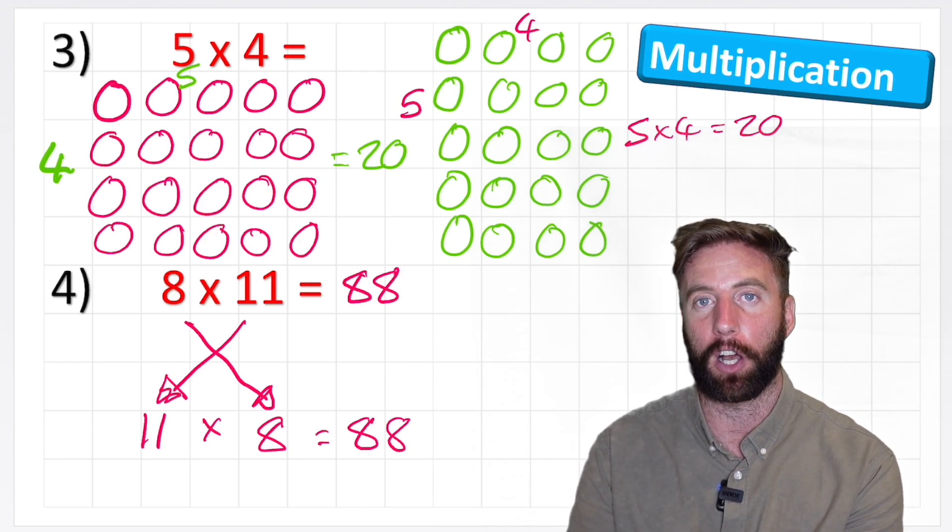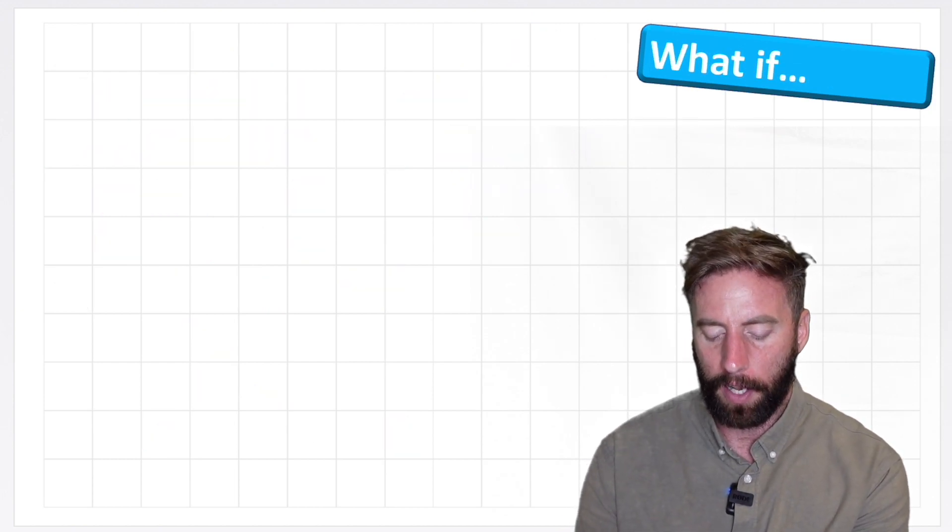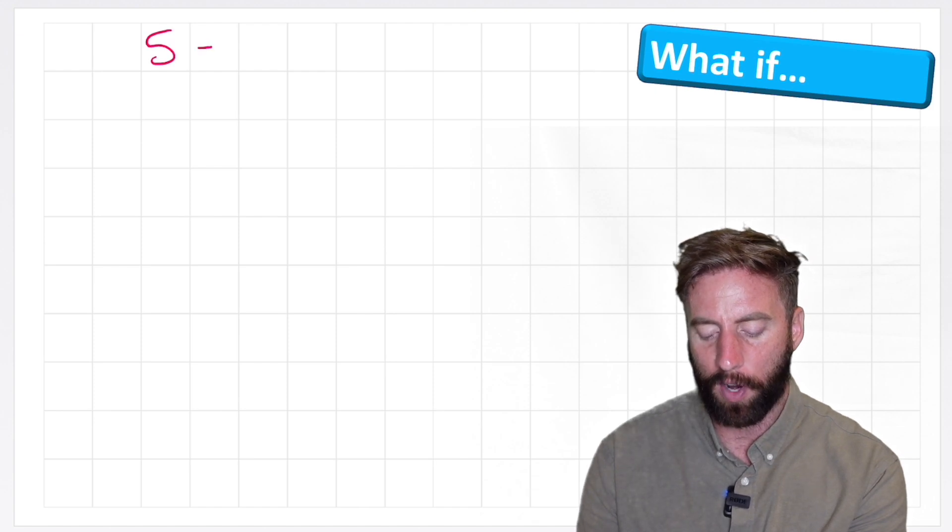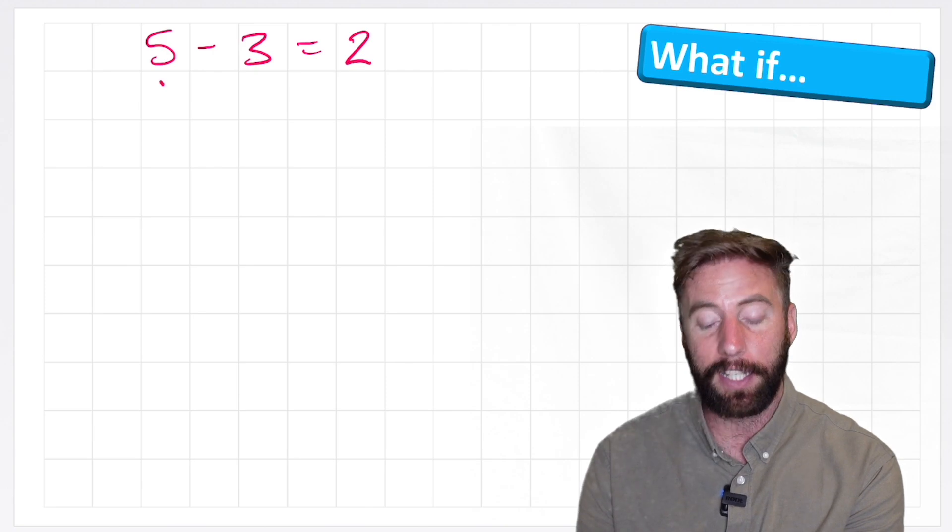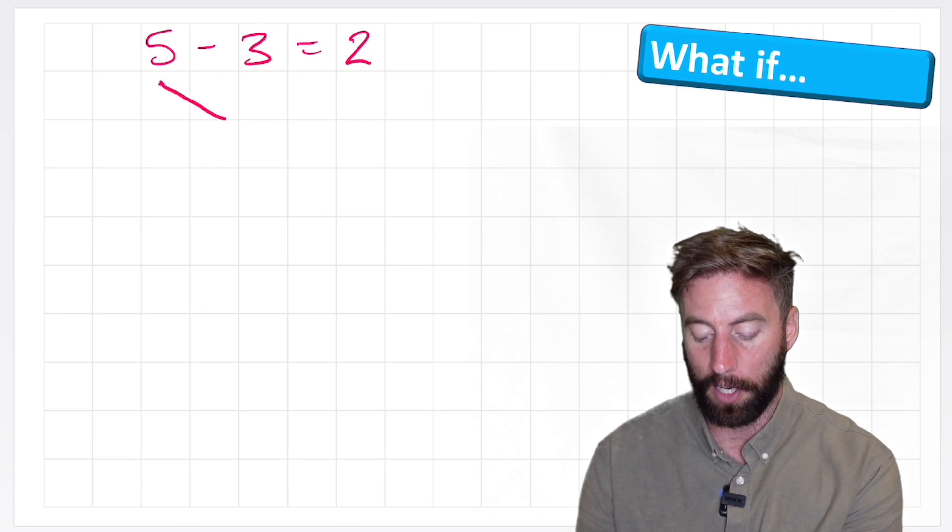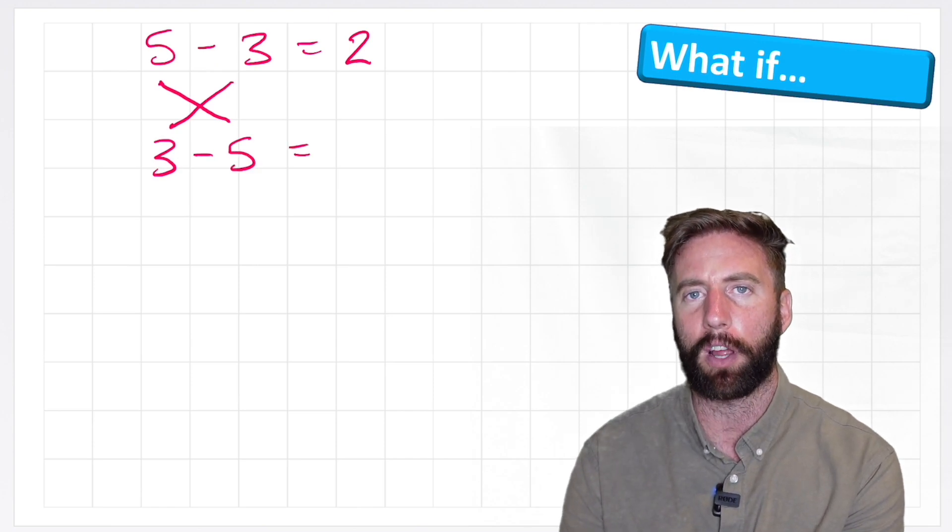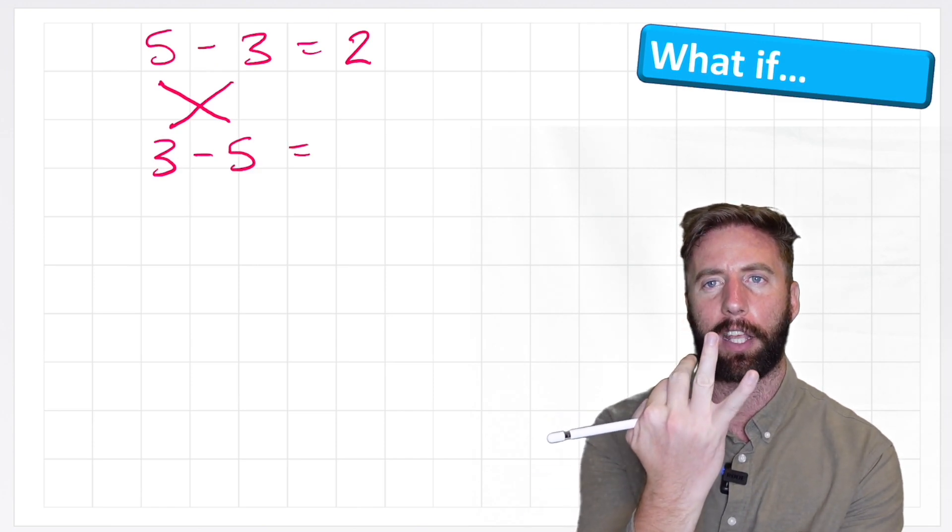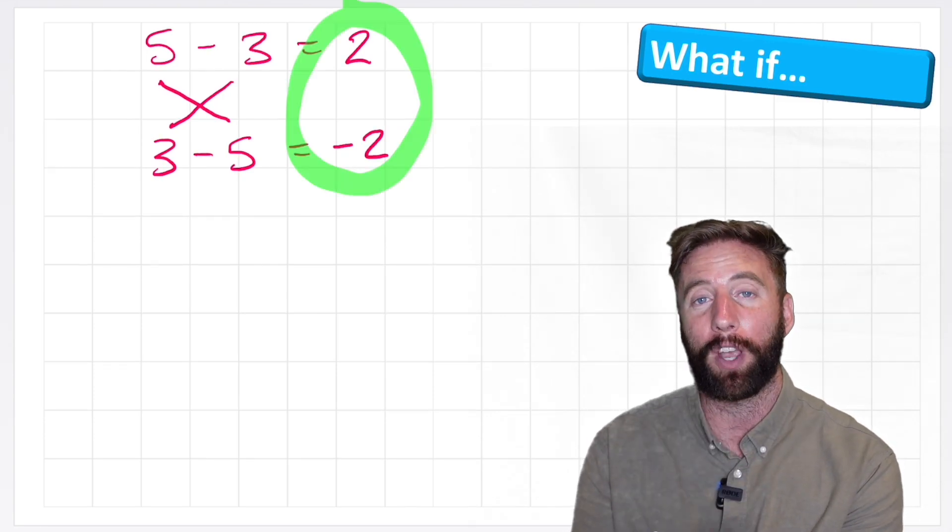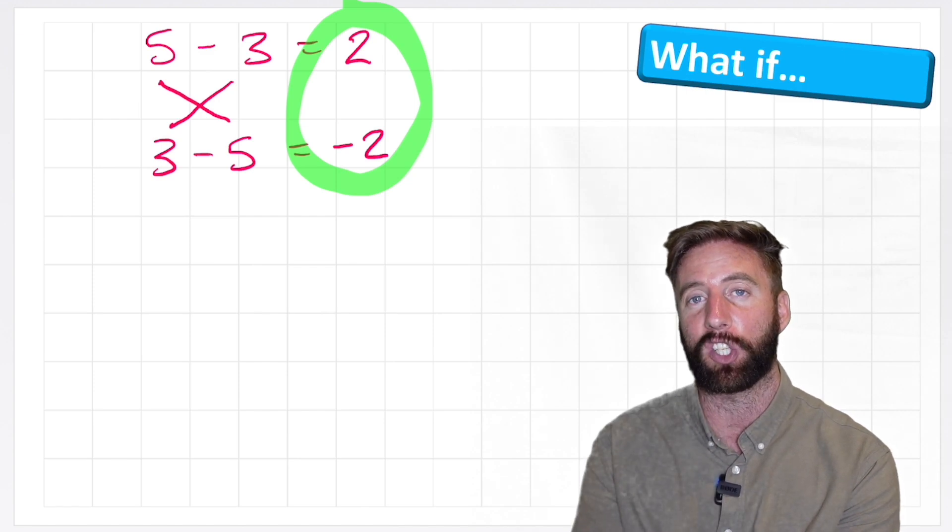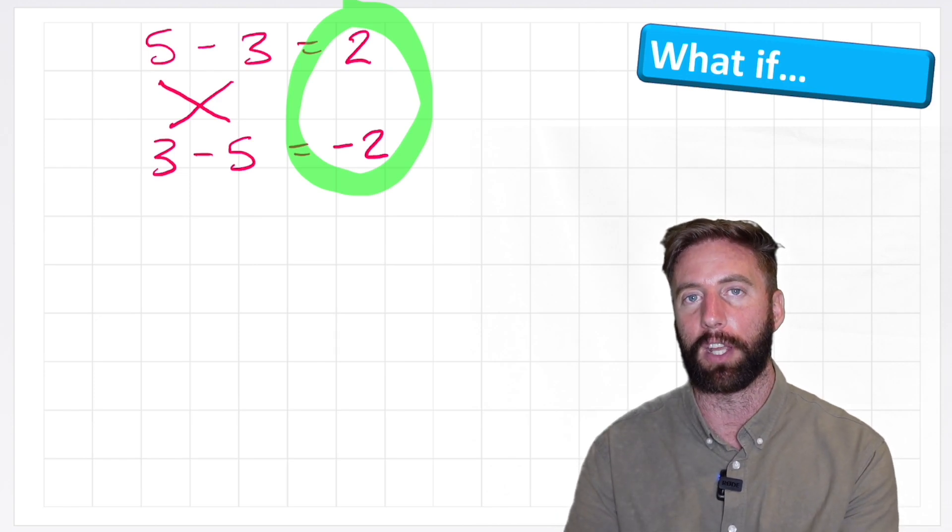It doesn't matter which way around we put the numbers in our question. Let's think about subtraction and division. Let's have a question: 5 - 3. 5 - 3 equals 2. Let's see if we get the same answer moving the digits around. 3 - 5. Well, if I have 3 and take away 5, I'm going to end up in negative numbers, negative 2. So I do not get the same answer if I flip these digits around. Therefore, subtraction is not commutative.